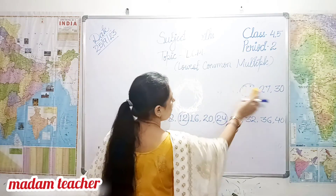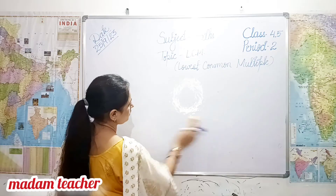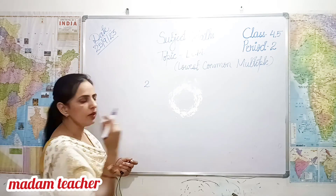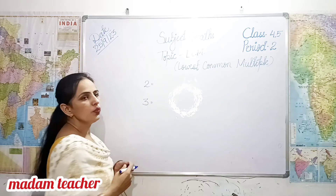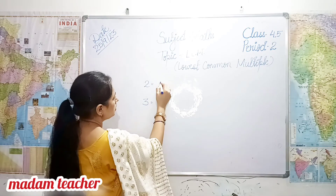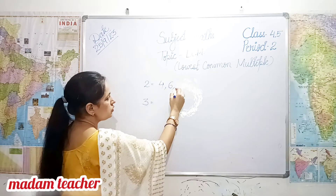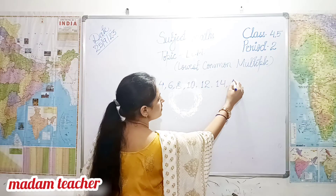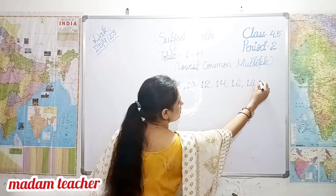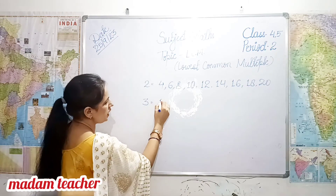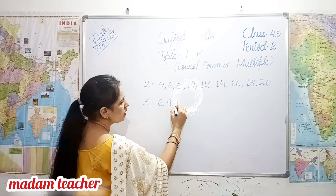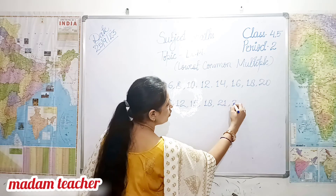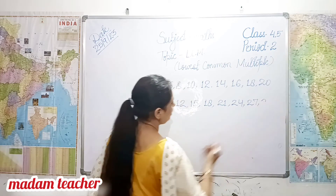Everybody look here. Suppose we have to find the LCM of 2 and 3. First we will write the multiples of 2: 2, 4, 6, 8, 10, 12, 14, 16, 18, 20. Then the multiples of 3: 3, 6, 9, 12, 15, 18, 21, 24, 27, 30.